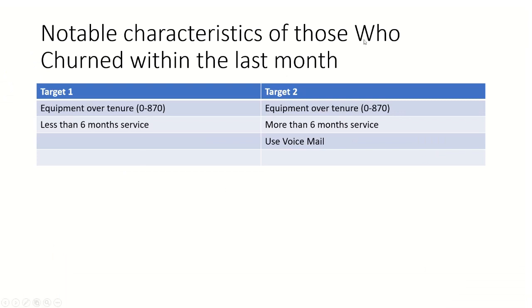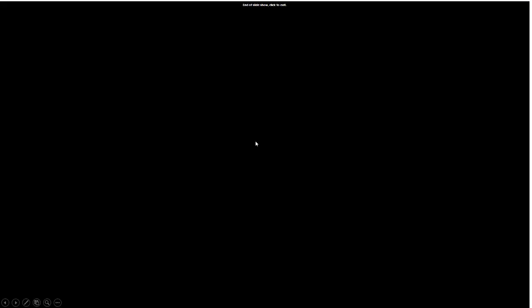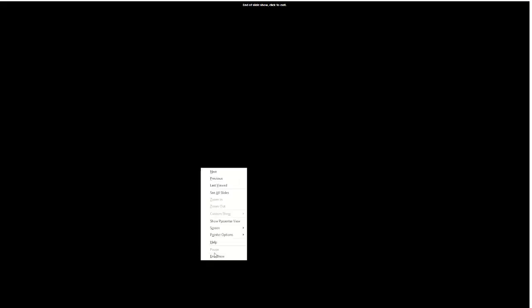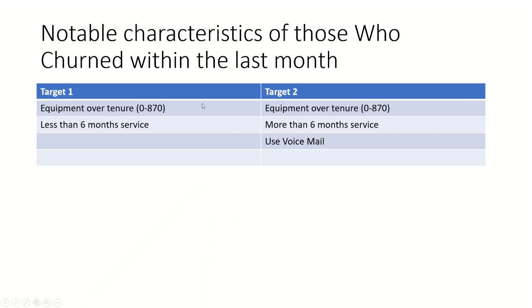What are the notable characteristics of those who churned within the last month? The first target, we understand the characteristics is equipment over tenure, zero to 870 with less than six months of service. This is one target. And then the other target is the people with equipment over tenure, zero to 870 with more than six months service and people who use voicemail. Now with this target, you can actually understand the two important segments.